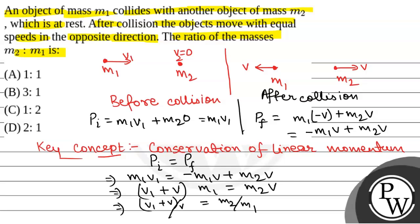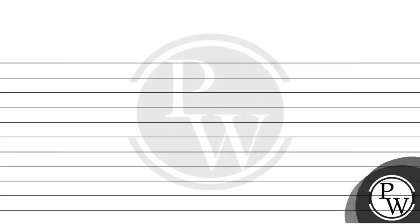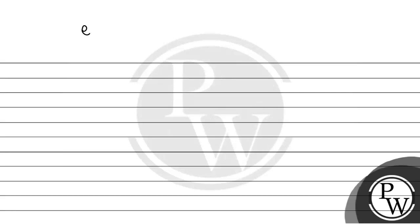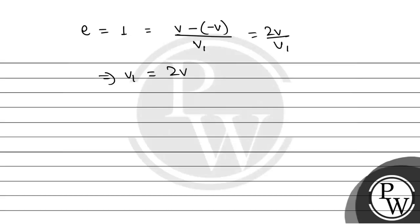Since after collision the speed of both objects is the same, the coefficient of restitution e is equal to 1. That equals (v minus of minus v) divided by v1, which is (v2 minus v1) over the initial speed v1. That gives 2v divided by v1, so from here v1 equals 2v.